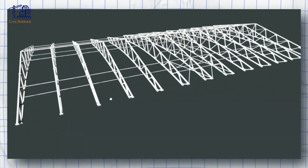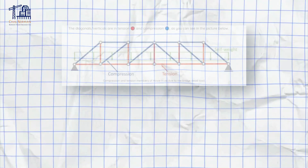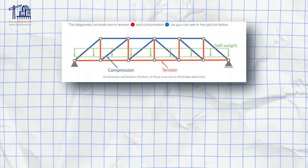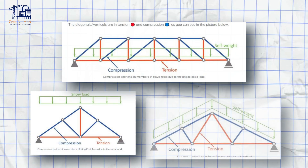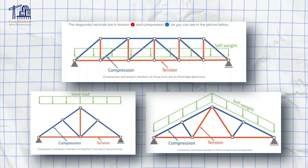Trusses are essentially an assembly of straight members configured in a specific way to transfer applied loads. The key is that these members primarily handle axial forces — that's either tension or compression.